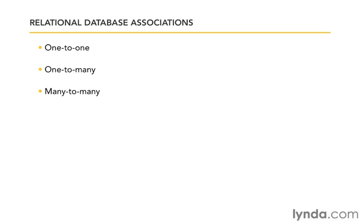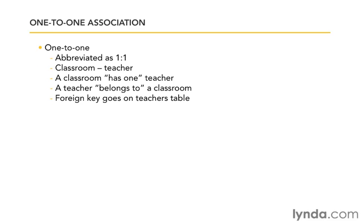To help you visualize each one, let's use a concrete example. Imagine there's a school with a bunch of classrooms, and each classroom gets assigned a teacher. The teachers don't move around — they stay in one classroom and teach four courses a day. An example of a one-to-one relationship would be the relationship between the classroom and the teacher. A classroom has one teacher; the teacher is assigned to the classroom. The classroom owns the teacher, which is why we say it has one teacher. It's the parent, while the teacher is considered the child. And as such, the foreign key goes on the teacher's table, so when we want to know what classroom the teacher belongs to, we can look at the teacher's foreign key.